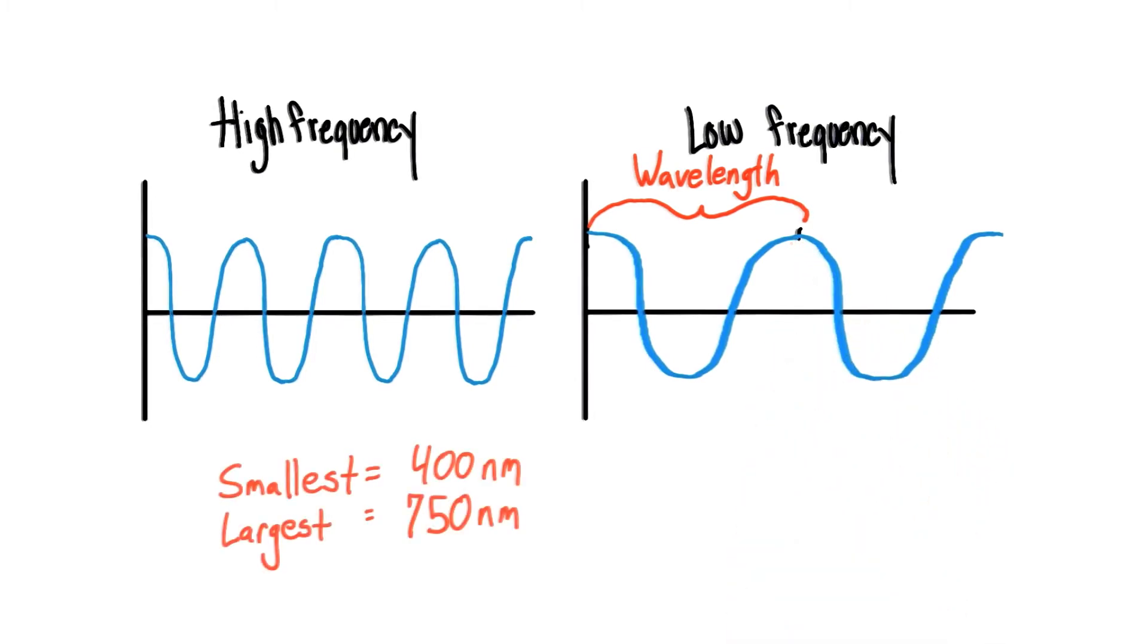Which wavelengths can we see? The smallest we can see is 400 nanometers, and the largest is about 750.